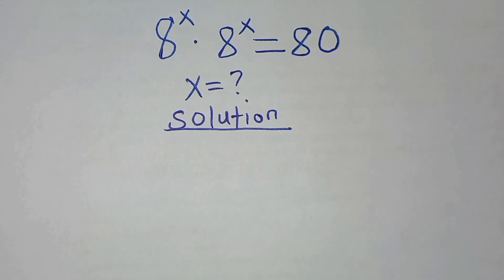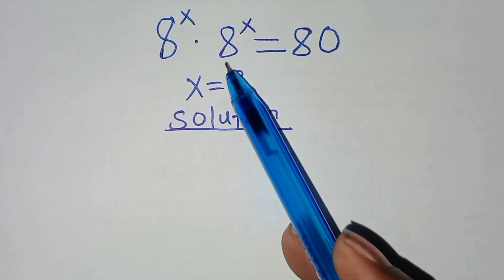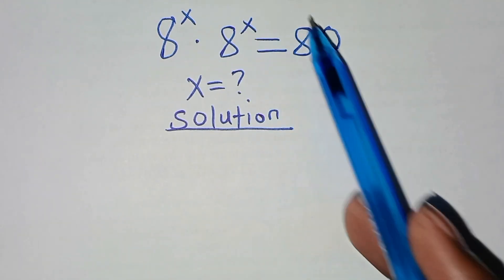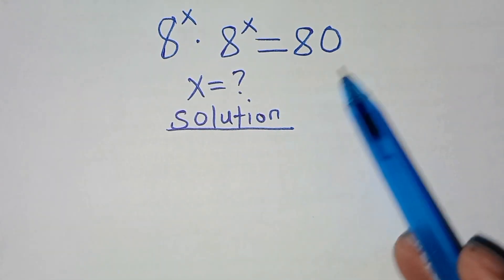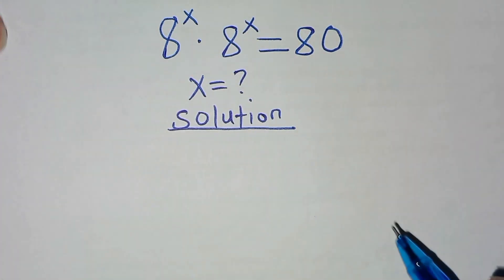Hello everyone, you are welcome to solve this nice exponential equation, which is 8 to the power x multiplied by 8 to the power x. This is equal to 80. So what is the value of x?